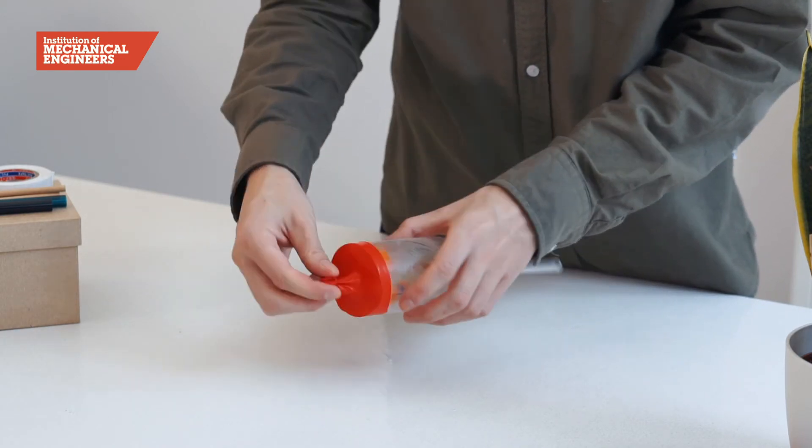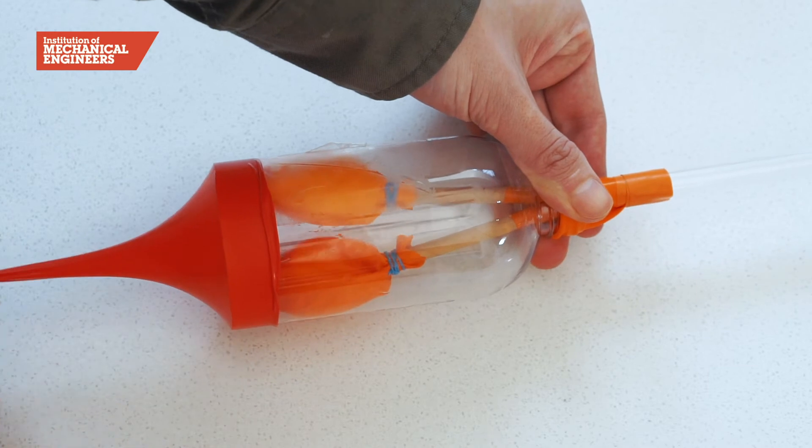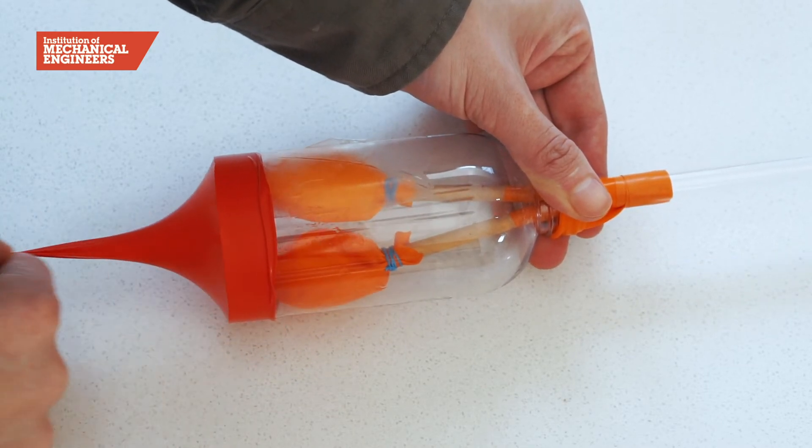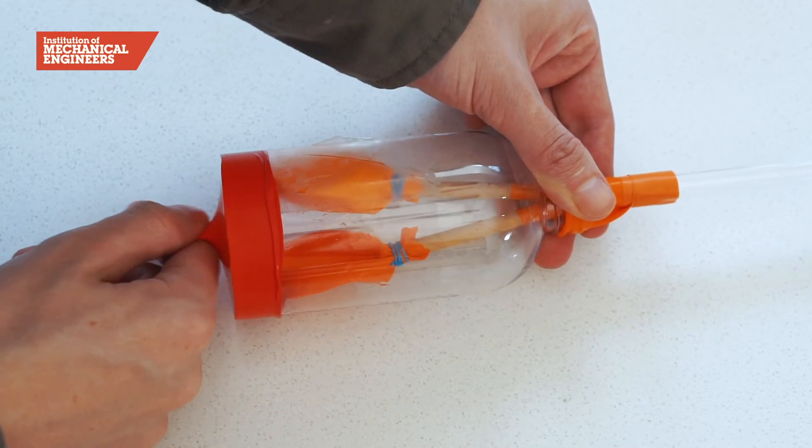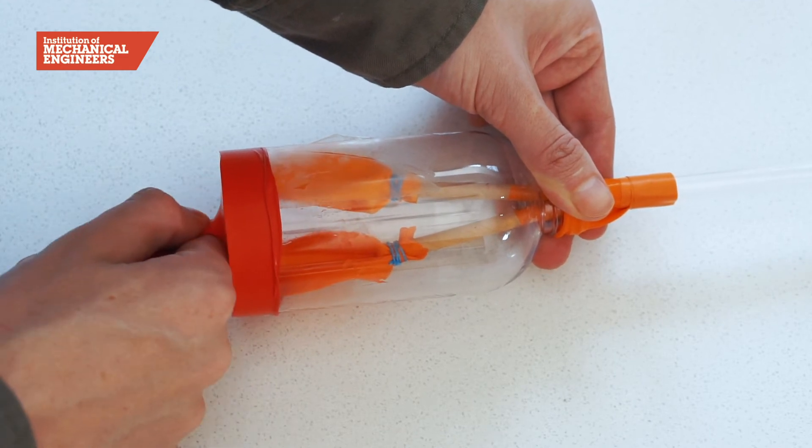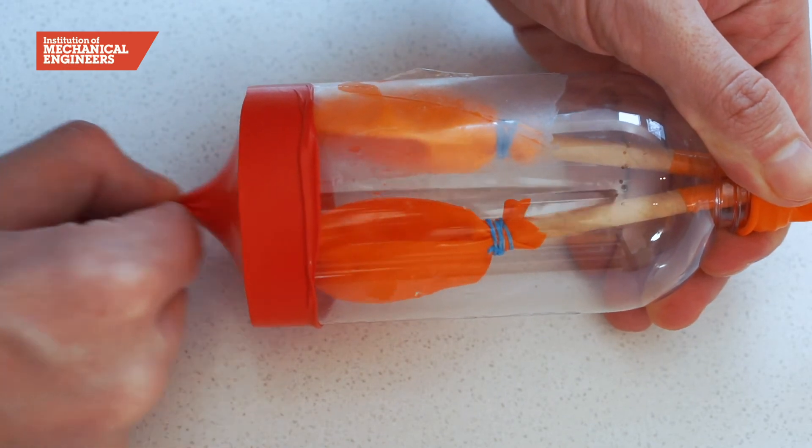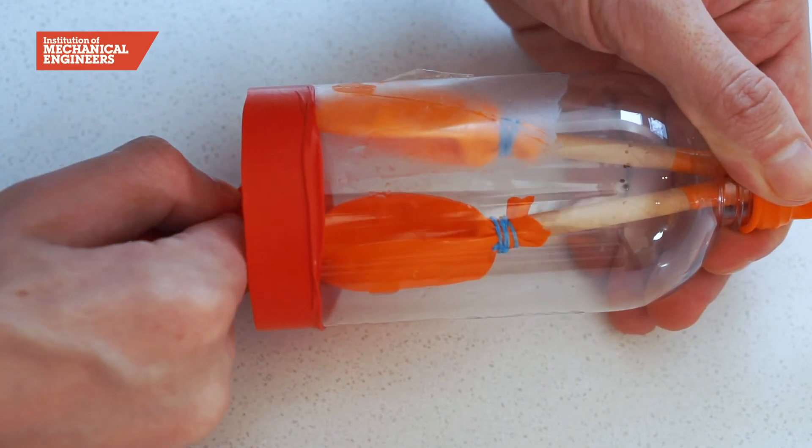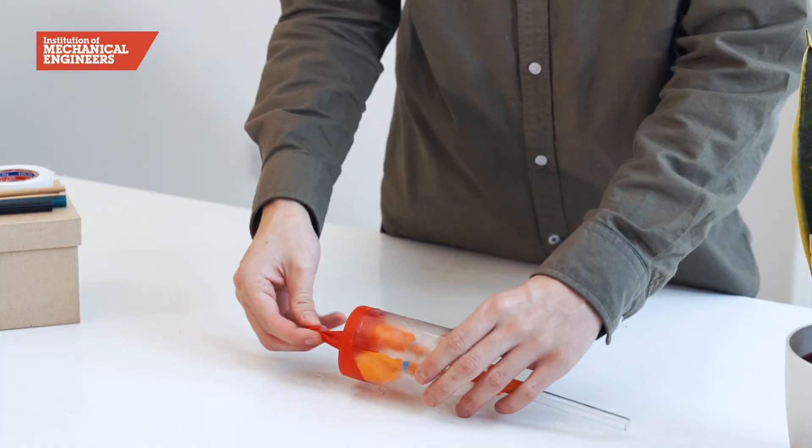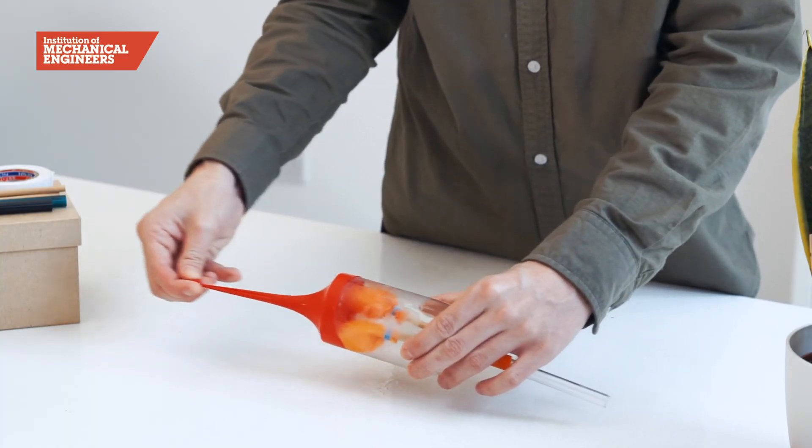As you can see when the knotted end of the balloon or diaphragm is pulled down it creates more space inside the bottle. Air then comes down the straw or trachea and fills the balloons or lungs with some air to fill the space. When the knot is let go the space no longer exists so the air from the balloons is expelled making them deflate.